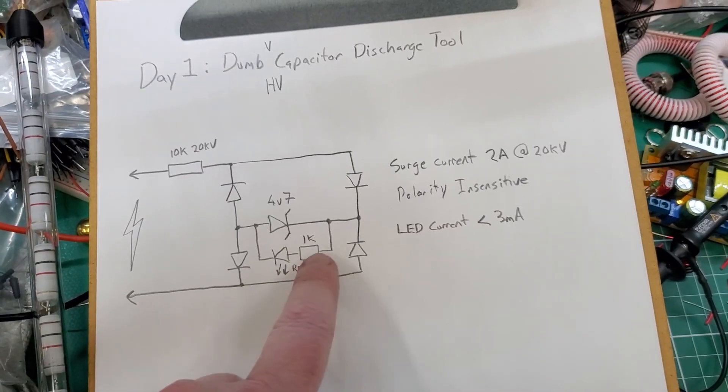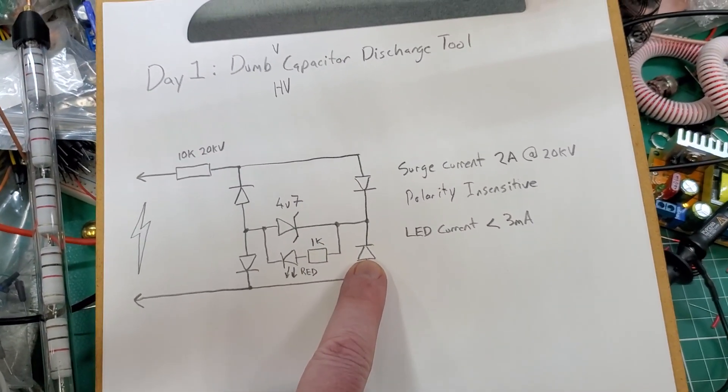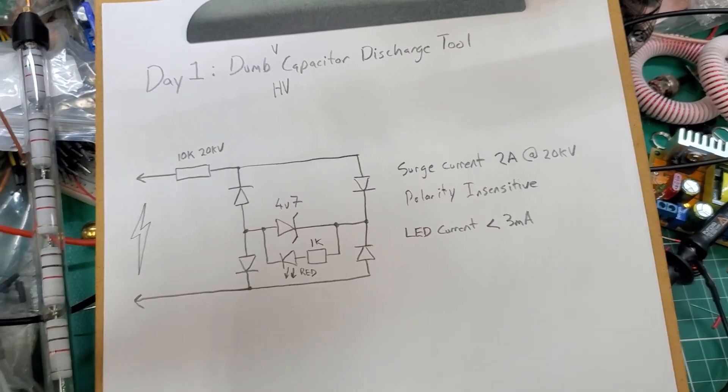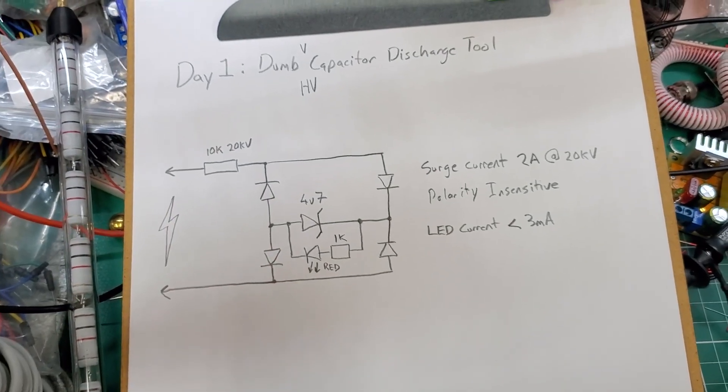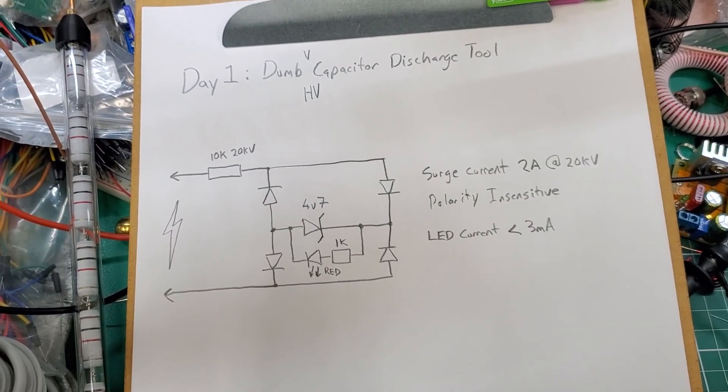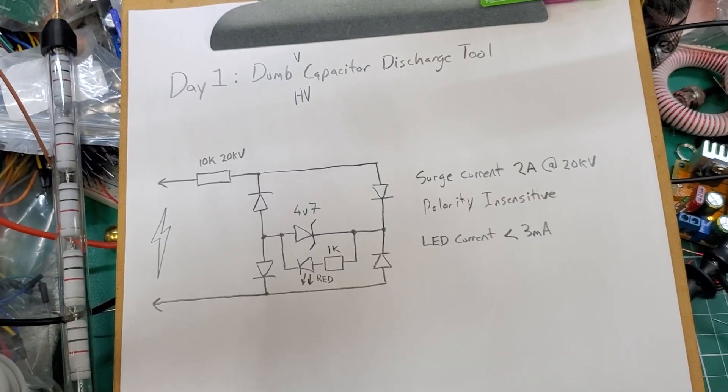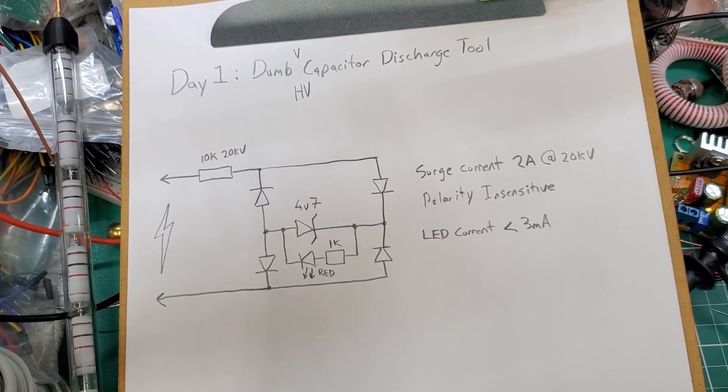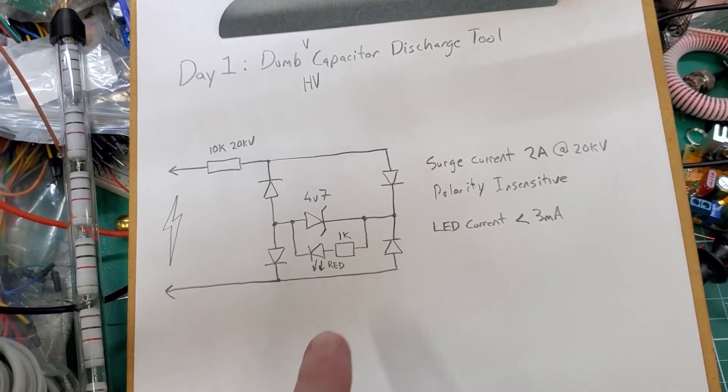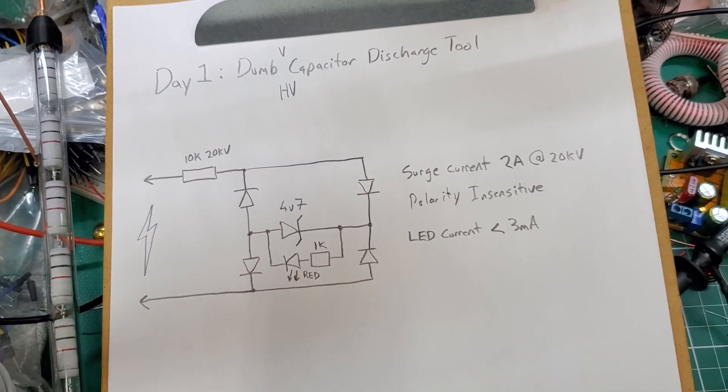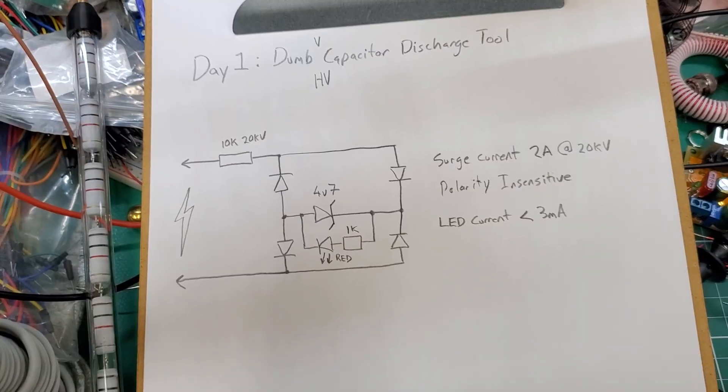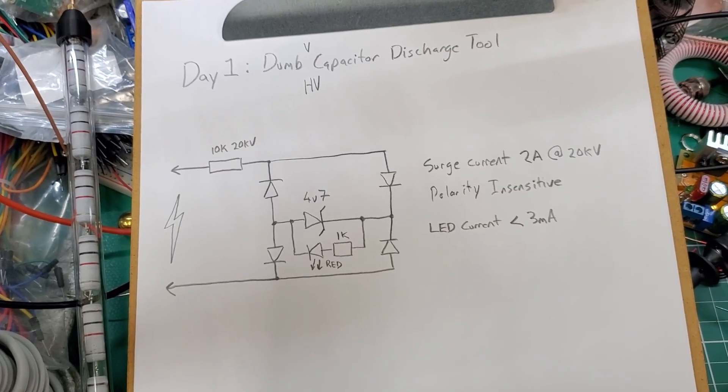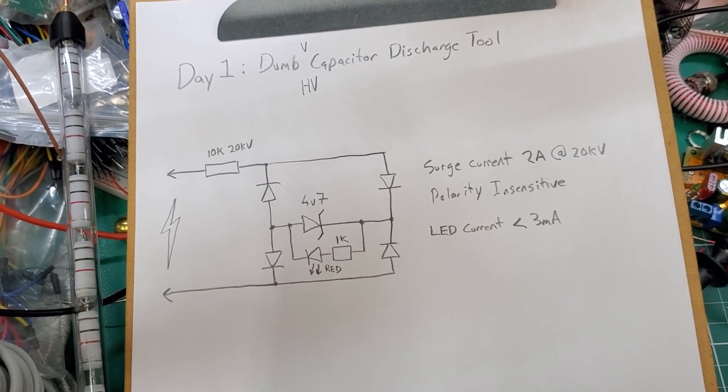The surge current that these diodes have to stand is about 2 amps maximum if you use this at 20 kilovolts, which I'm not sure I would use this particular tool the way I built it at 20 kilovolts. But you just have to have suitably rated diodes. Fortunately, that current is not there for very long, so they don't really need to be particularly highly rated. This Zener is only a 5 watt Zener. The pulse power is fairly high, but the actual CW power is quite low.